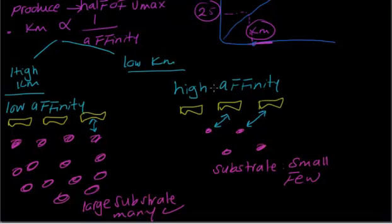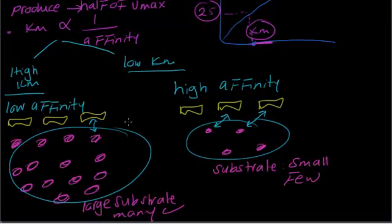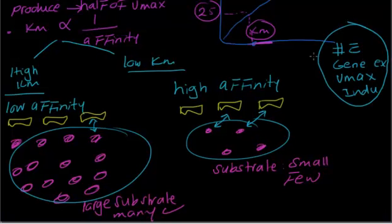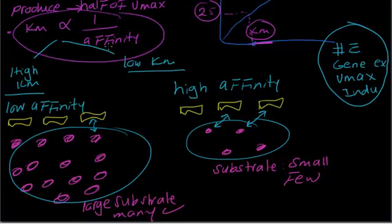All of this topic is about substrate concentrations — the substrate number changes, not the enzymes. The enzymes topic, which we talked about first, means number of enzymes equals gene expression equals Vmax equals induction. In this topic, Km is related to the inverse of affinity: high substrate concentration means low affinity; low substrate concentration means high affinity of substrate binding to enzymes.